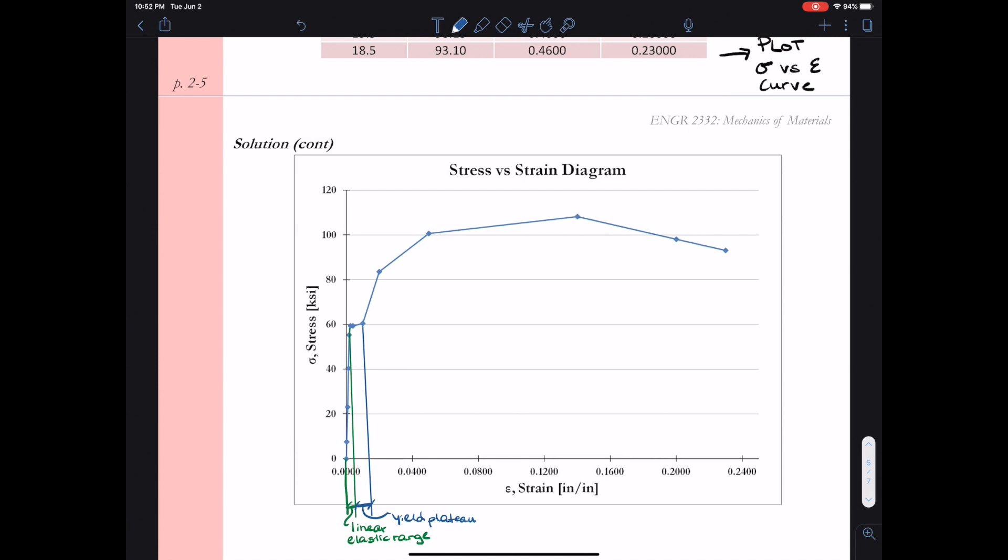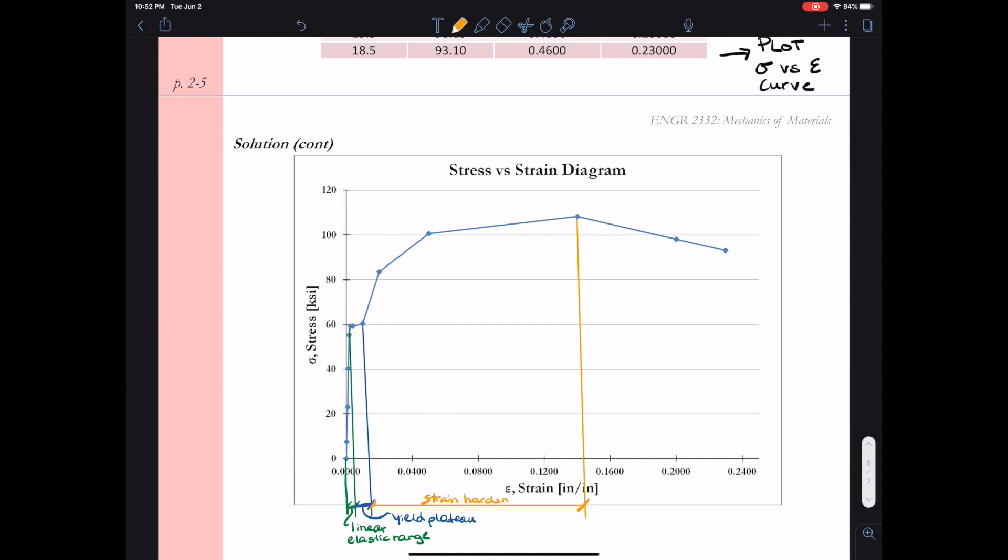Next, we start to engage the kind of reserve strength of the material, or we have increased amount of force to cause additional deflection. So this is called our strain hardening region. So we see that the material strain hardens up to its max. And then finally, we have necking where the test specimen starts to lose the amount of force it can carry as the cross-sectional area rapidly reduces, ultimately leading to fracture of the specimen.